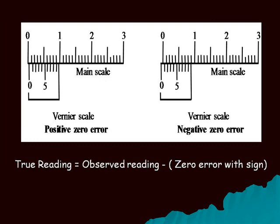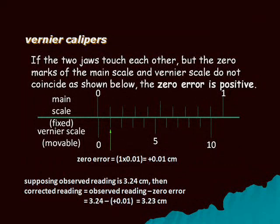The true reading is equal to the observed reading minus the zero error (with sign). For example: if the two jaws touch each other but the zero mark of the main scale and vernier scale do not coincide, the zero error is said to be positive. Here, the first division of the vernier is coinciding with the main scale. Zero error is 1 × least count, that is 1 × 0.01, equal to +0.01 centimeters.